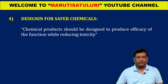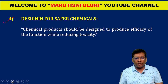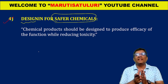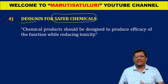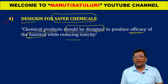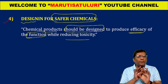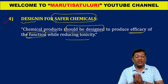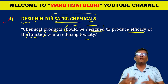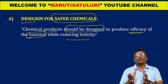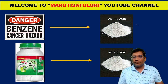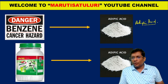Coming to the fourth principle: design for safer chemicals. Any new chemical you prepare should be very safe. The definition is: new chemical products should be designed to produce the efficacy of the function while reducing the toxicity. If you are preparing any new chemical product, it should be very safe and should not have any toxicity. You need to design the chemical product in that way.